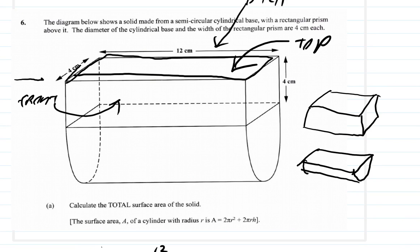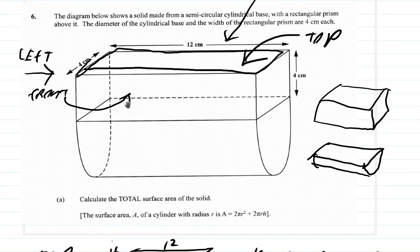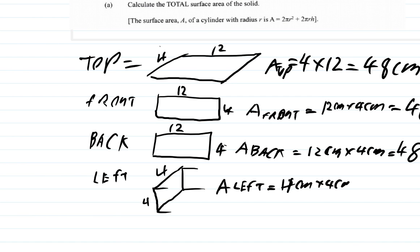Now the left side of the prism — just the left side alone. It would look something like this. The dimensions are 4 wide by 4 high, so 4 by 4. The area of the left side is 4 cm × 4 cm = 16 cm².